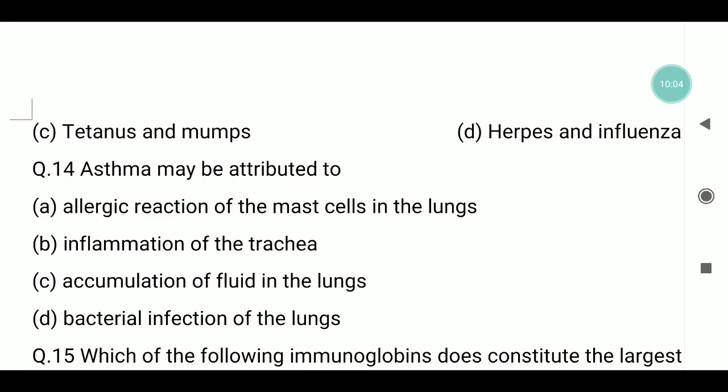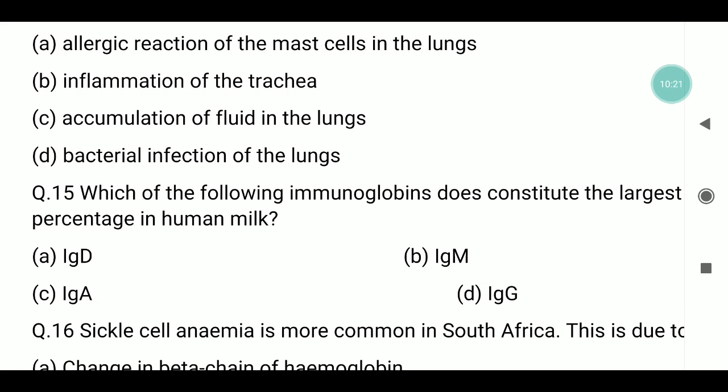Question number fourteen continued: asthma may be attributed to what? Asthma causes symptoms such as difficulty breathing. The answer is allergic reaction of the mast cells in the lungs. Question number fifteen: which immunoglobulin constitutes the largest percentage in human mother's milk? Immunoglobulin A is the most present; it is very nutritious and important for the baby, which is why breastfeeding is recommended.